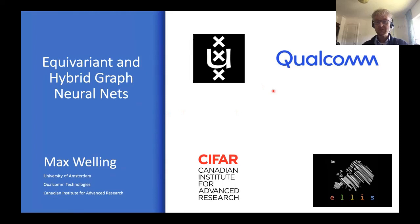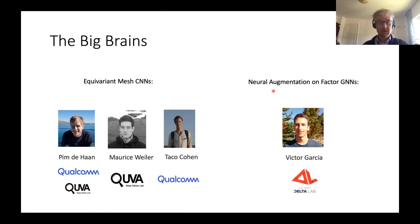I'm going to talk about graph neural nets today, in basically two parts: one is about equivariance and the other one is about hybrid neural nets. The big brains behind these projects are my very talented students and colleagues. For the equivariant mesh CNNs, there's Pim de Haan, Maurice Weiler, and Taco Cohen. On the neural augmentation for graph neural nets, I've been working with Victor Garcia. The first team is in Qualcomm Cuba, and the second team is at the Delta Lab, which is sponsored by Bosch.